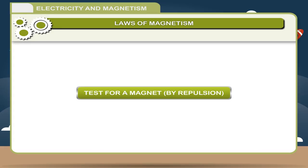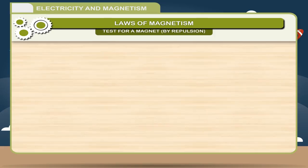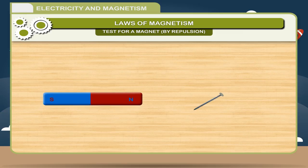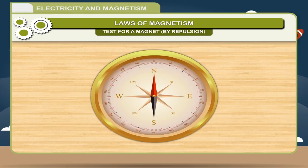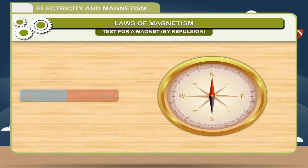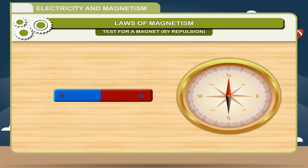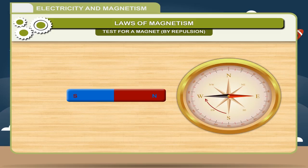Test for a magnet — By repulsion: The materials that attract iron are called magnets. Most substances are not magnetic. We can use a compass to find out whether a substance is magnetic or not. One end of the compass needle normally points to the north. If a magnetic substance comes close to the needle, it will make the needle turn. Thus, if it is needed to use a compass, it is important to make sure that there is no magnetic metal nearby.